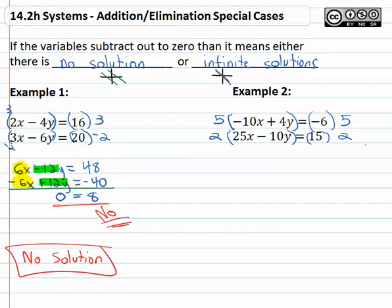So in the first equation distributing the 5 through, we have negative 50x plus 20y equals negative 30. And the second equation when we distribute the 2 through, we get positive 50x minus 20y equals positive 30.